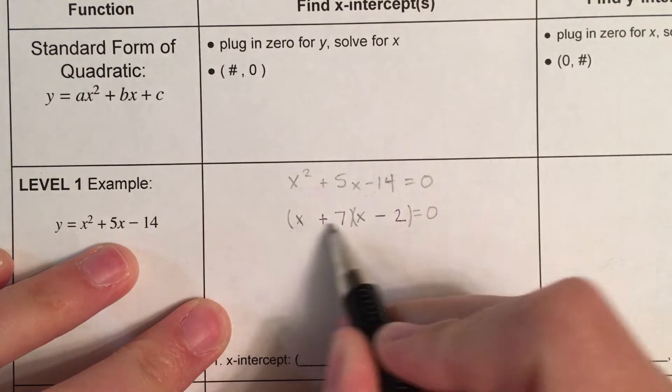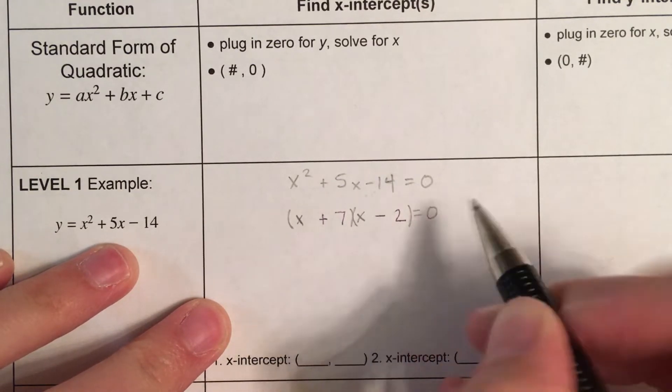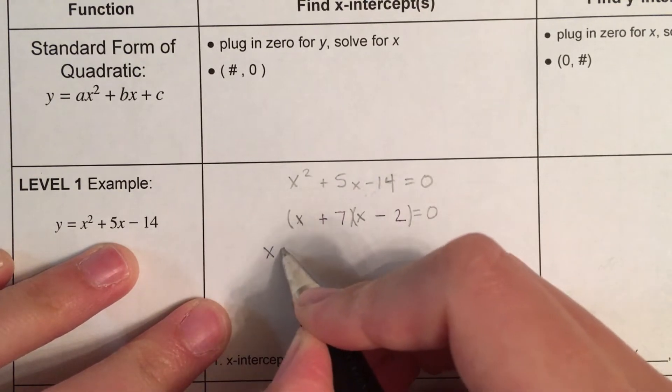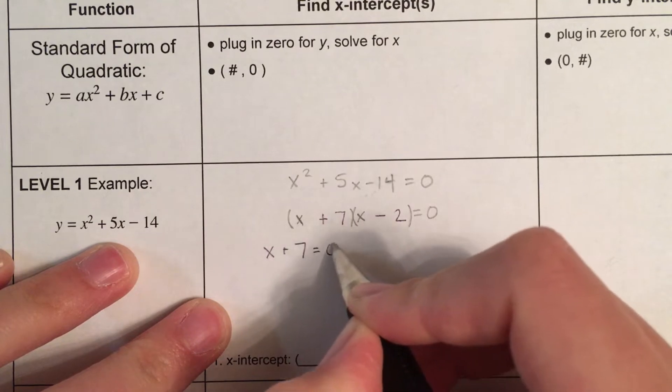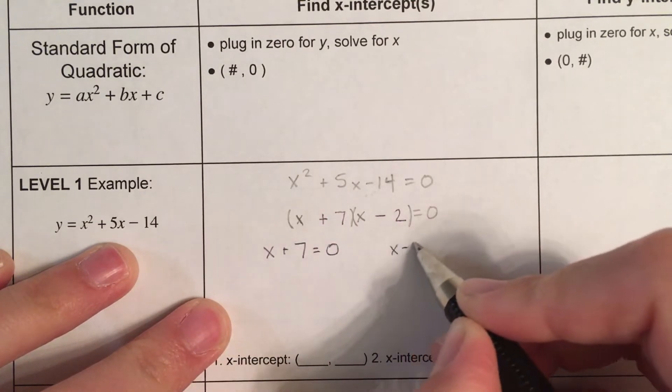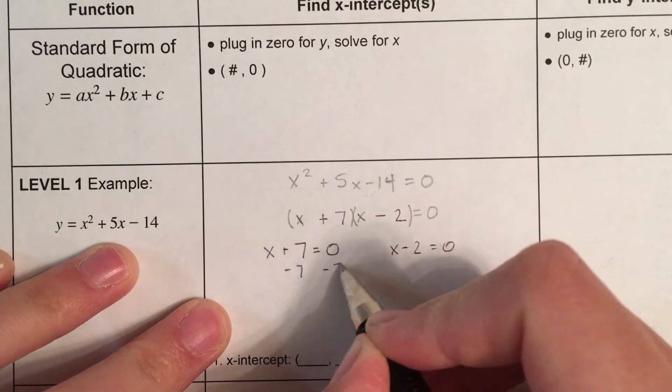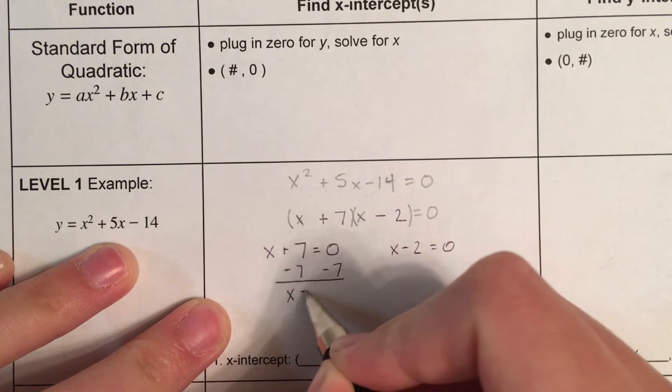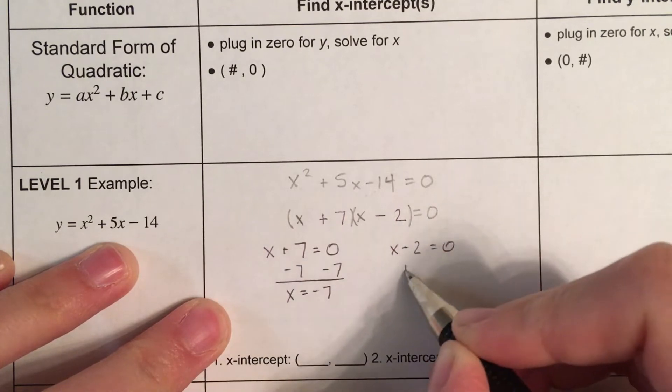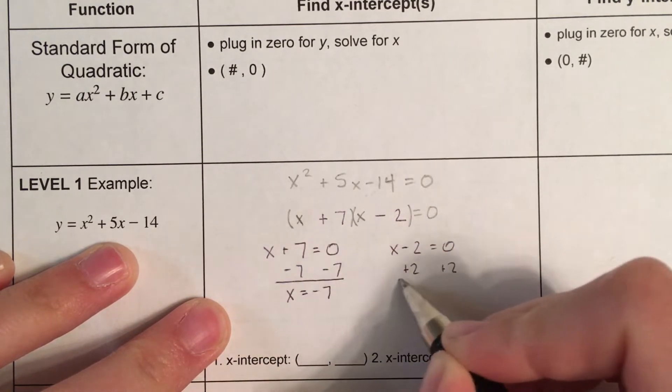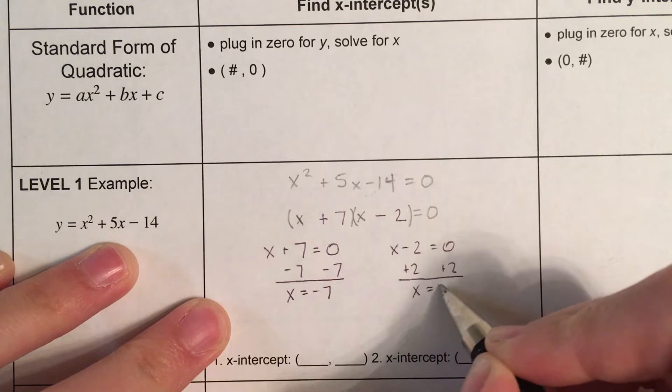So, then I know that if this number times this number equals 0, then either x plus 7 equals 0, or x minus 2 equals 0. So, let's solve. I get x equals negative 7, or x equals positive 2.